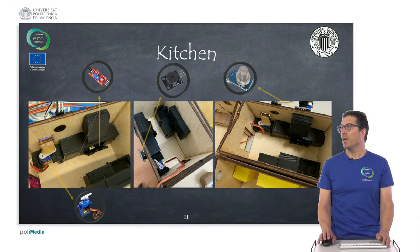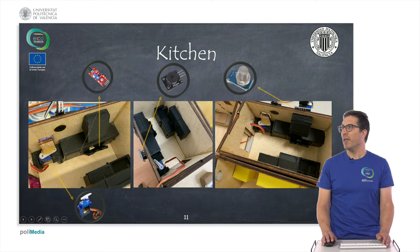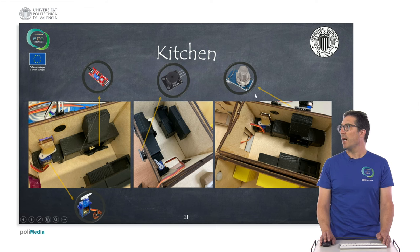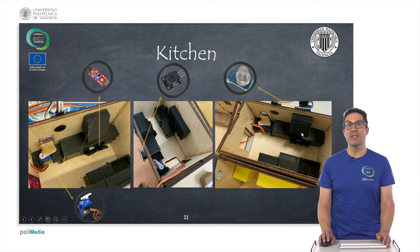In the kitchen, there is another servo to open and close the window. A flame sensor, located inside the oven model, is used to detect fire. A buzzer provides the alarm signal. A gas sensor, which is hidden inside, is used to detect gas.